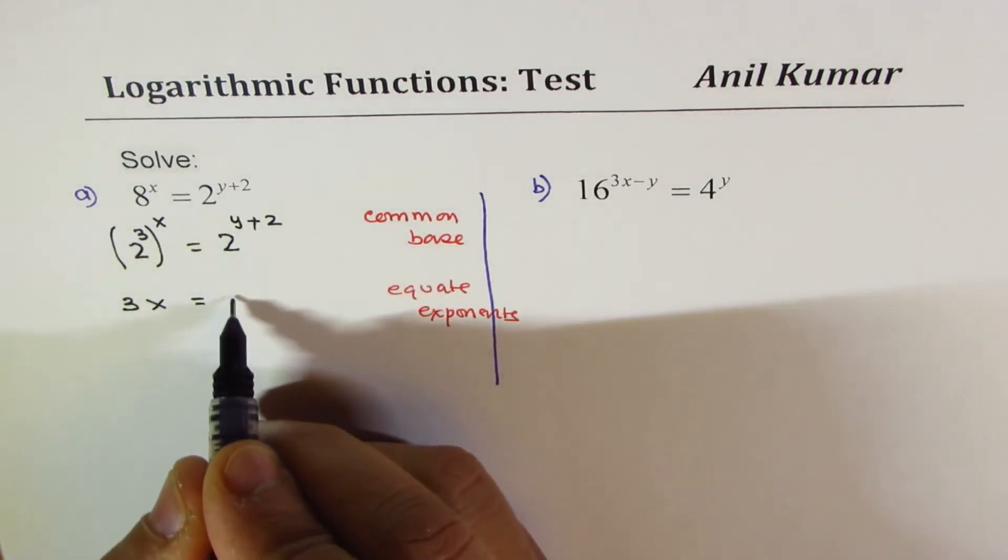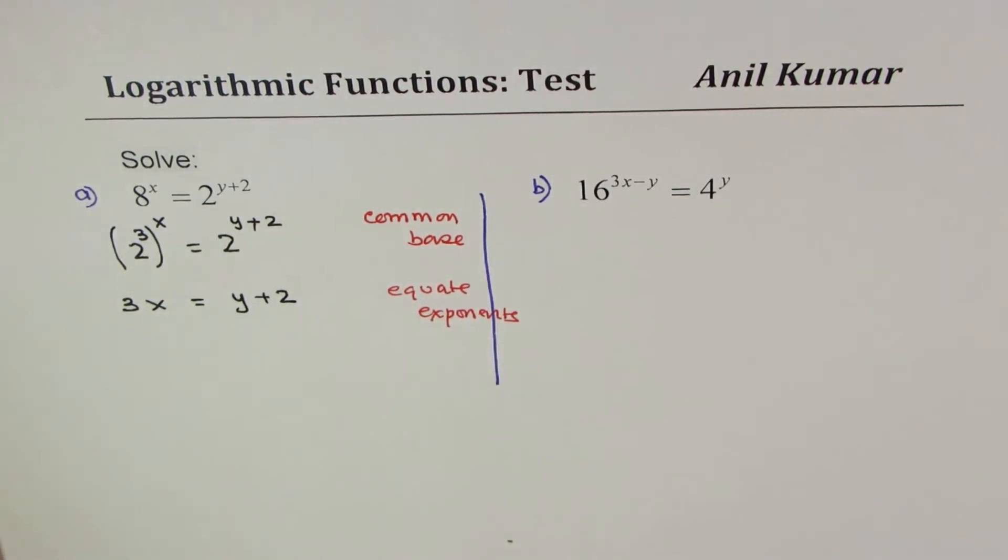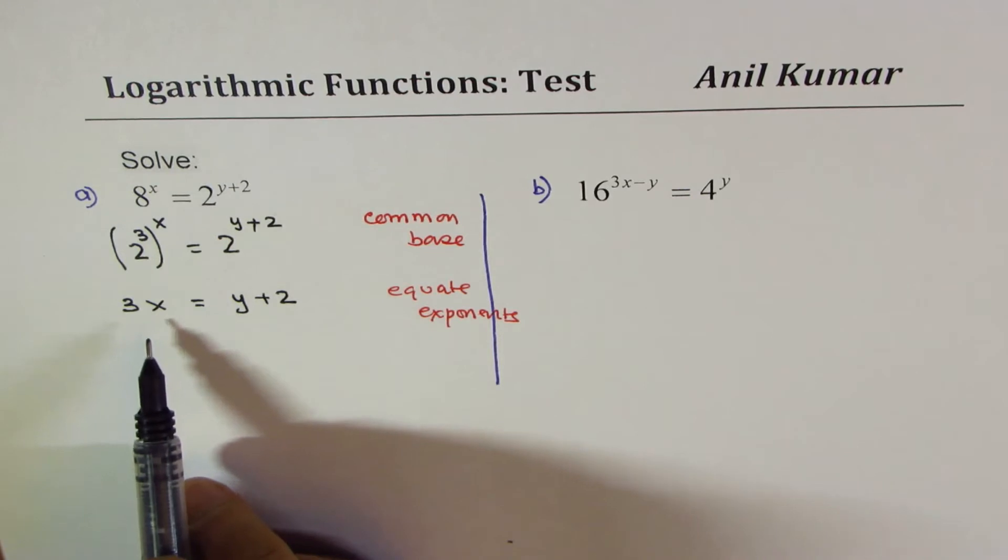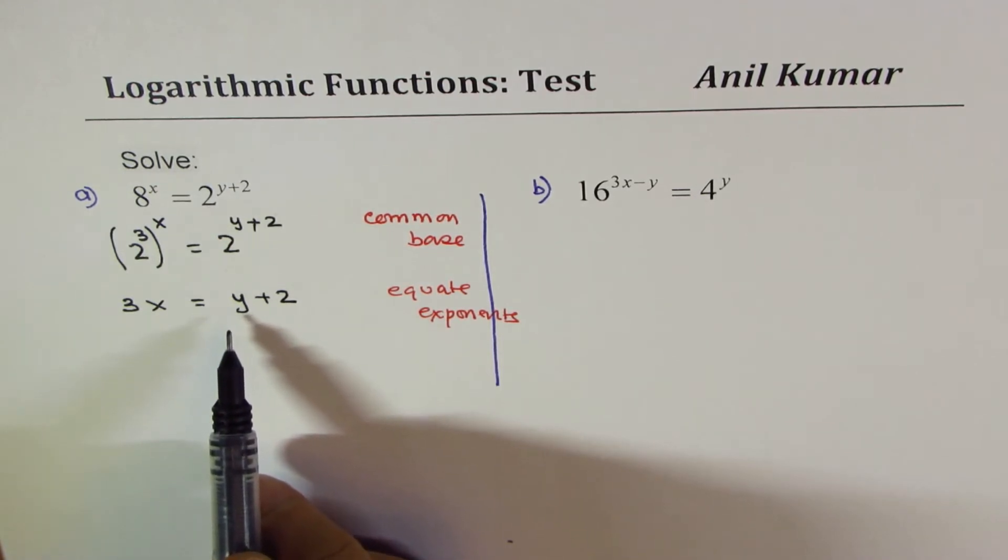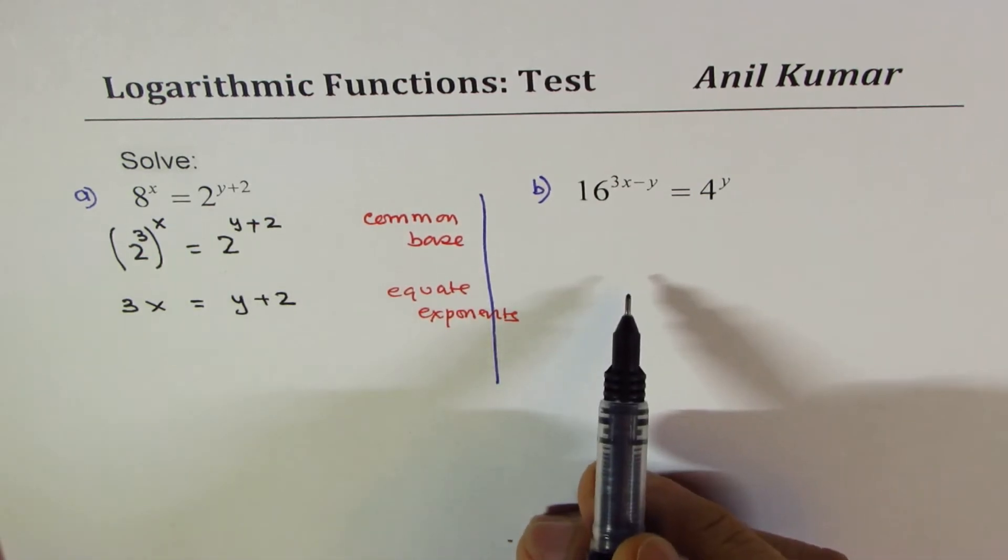For the first one, it is 3 times x equals y plus 2. What do you notice here is that you don't really get a value of x or y. You get a value which is kind of dependent on one another. Let us work on the other side and see what we get there.